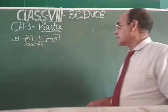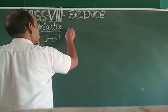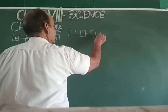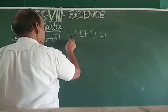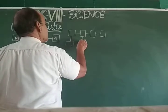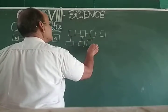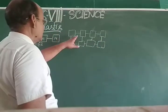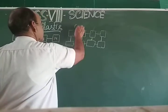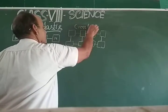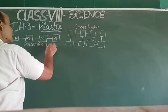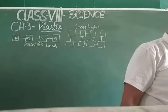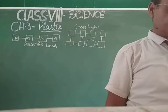The second arrangement is cross-linked. In a cross-linked arrangement, the monomer units are linked in multiple directions, forming a complex network. So, simple plastics have a linear arrangement, while complicated plastics have a cross-linked arrangement.